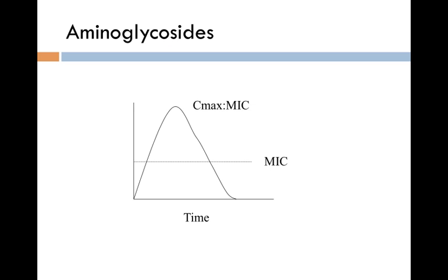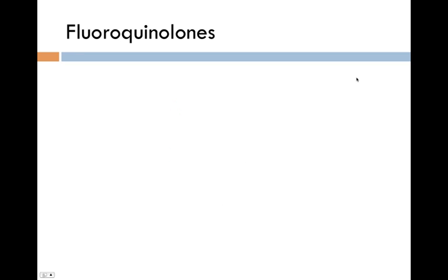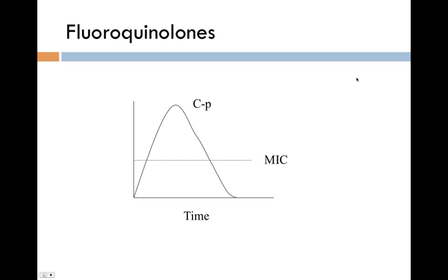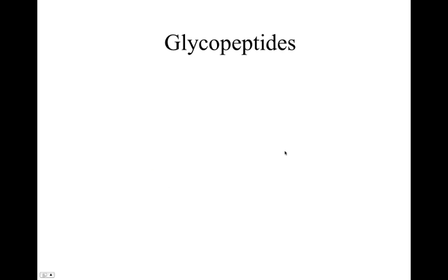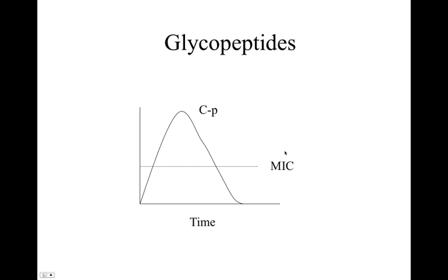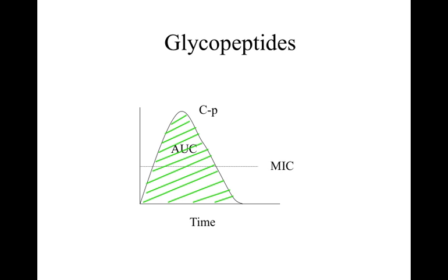Aminoglycosides are concentration-dependent killers, and what's most important is the C-max to MIC ratio — we want that very high peak to improve outcomes. Fluoroquinolones require the area under the curve over the MIC to be optimized, at least 100. Glycopeptides seem to correlate with the entire area under the curve — not just the area under the curve over the MIC — but the total AUC. These are all parameters we can calculate and try to optimize in our patients.